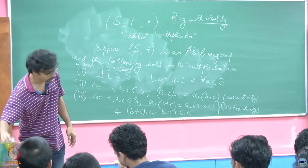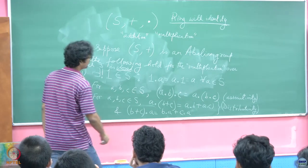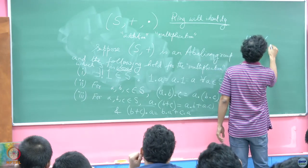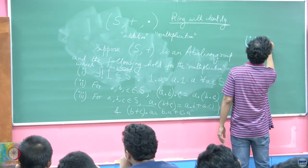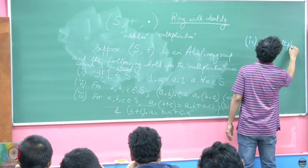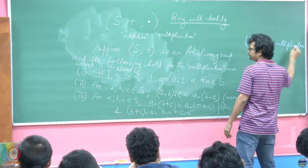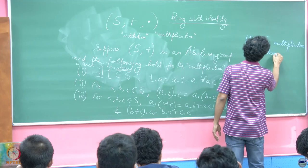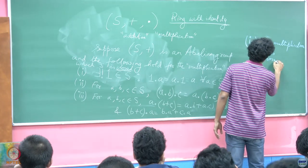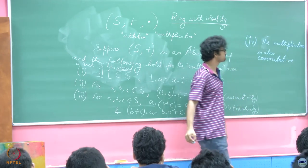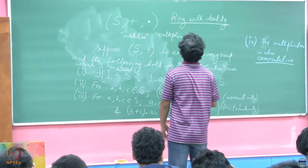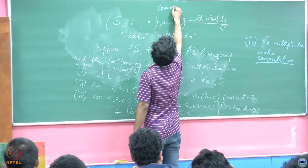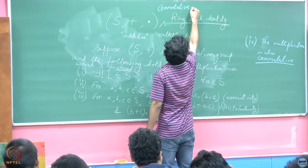What if I now impose the additional condition that multiplication is also commutative? Then what we get is called a commutative ring with identity. Any example comes to mind?